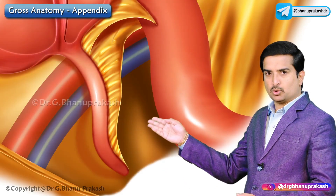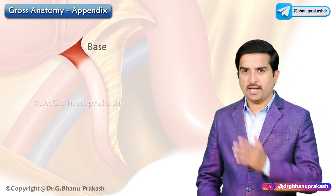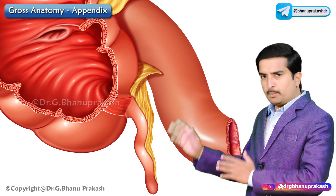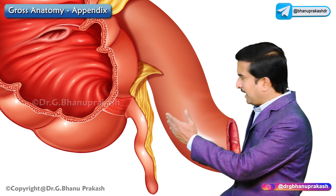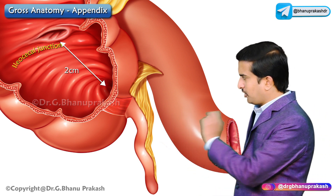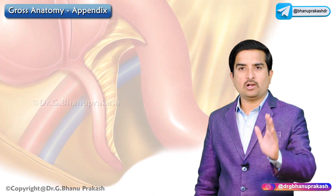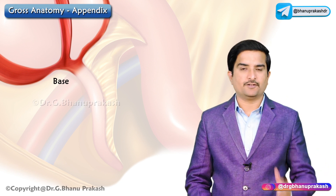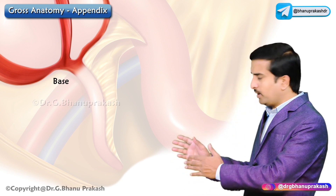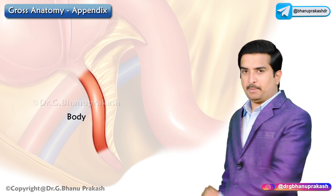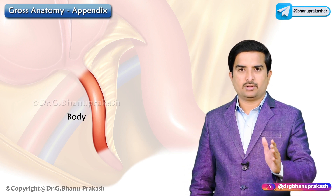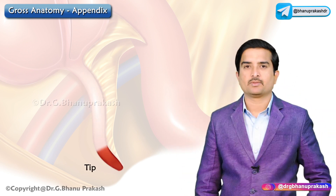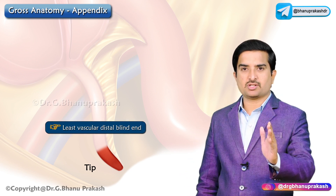The appendix has three parts: base, body, and tip. The base of the appendix is attached to the posteromedial wall of the cecum, approximately two centimeters below the ileocecal junction. At the base, all three taeniae of the cecum converge, and this convergence serves as a guide for the surgeon to locate the appendix during appendectomy. The body of the appendix is the narrow tubular part between the base and the tip.